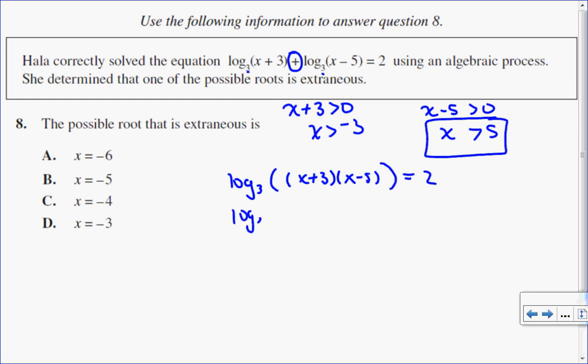Let's simplify my argument by applying the distributive property. So x times x, x times negative 5, 3 times x, 3 times negative 5 equals 2. So log base 3 of x squared minus 2x minus 15 equals 2.